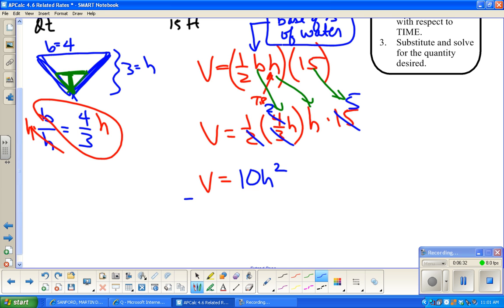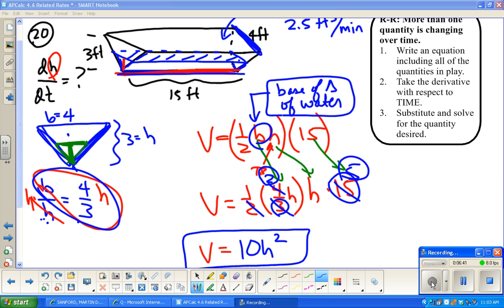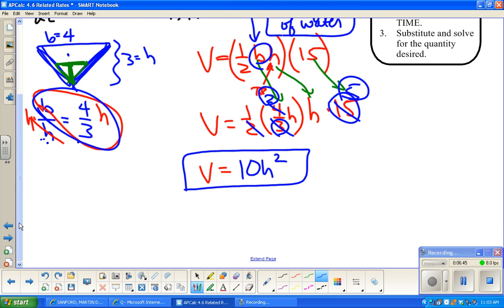Okay, so now that I have this, I can do the derivative. So at this point we can actually do a derivative now. So dV/dt equals 20H dH/dt.